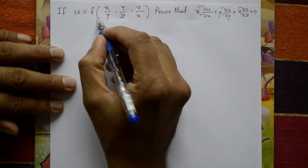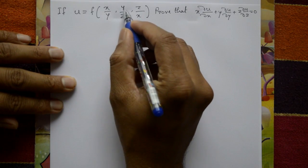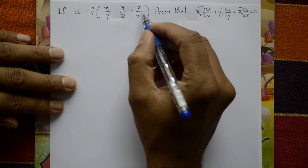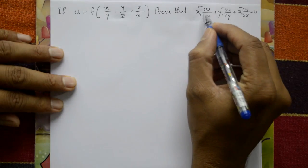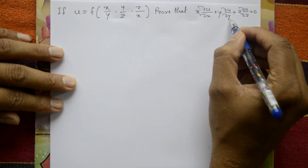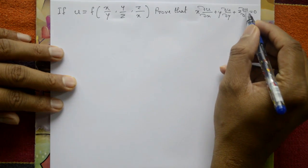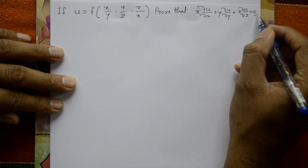If u is equal to f of x by y, y by z, z by x, prove that x into ∂u/∂x plus y into ∂u/∂y plus z into ∂u/∂z is equal to 0.